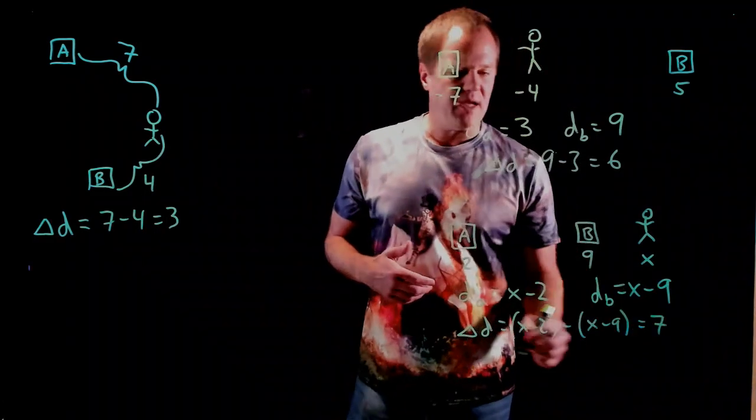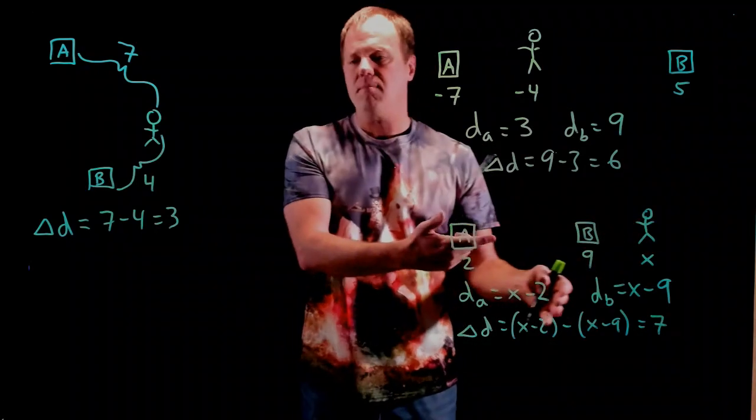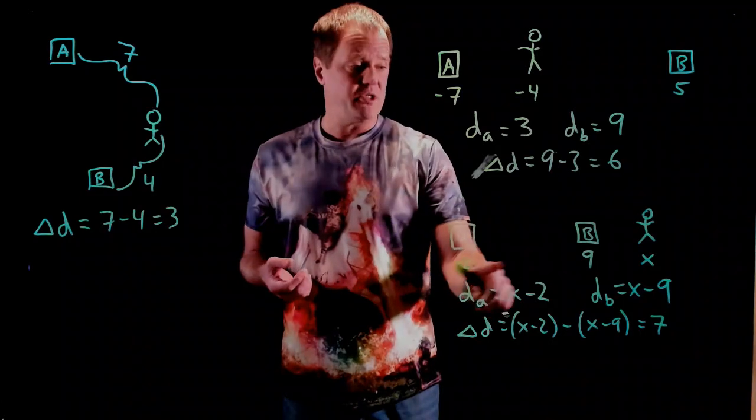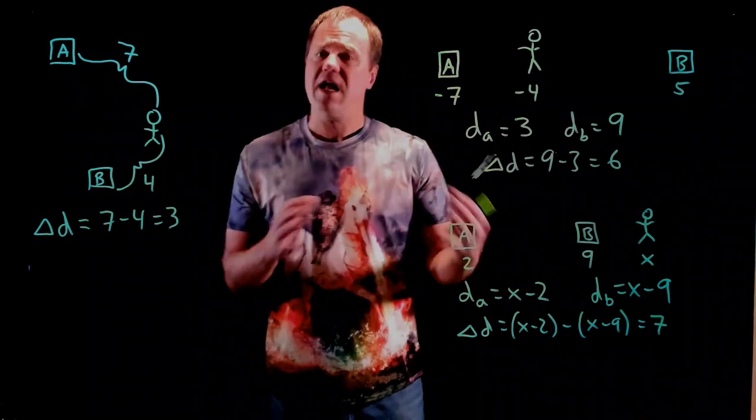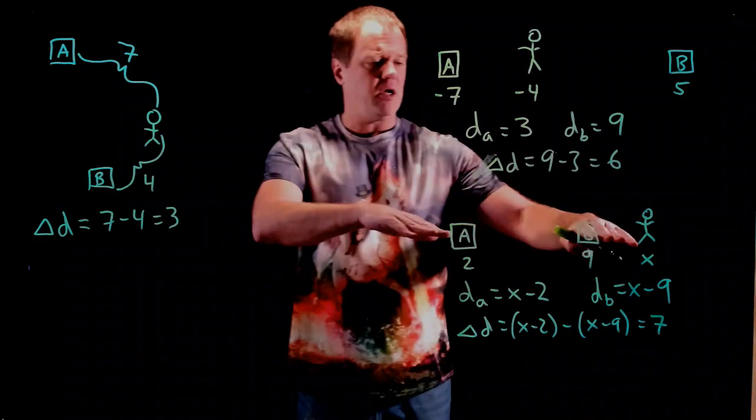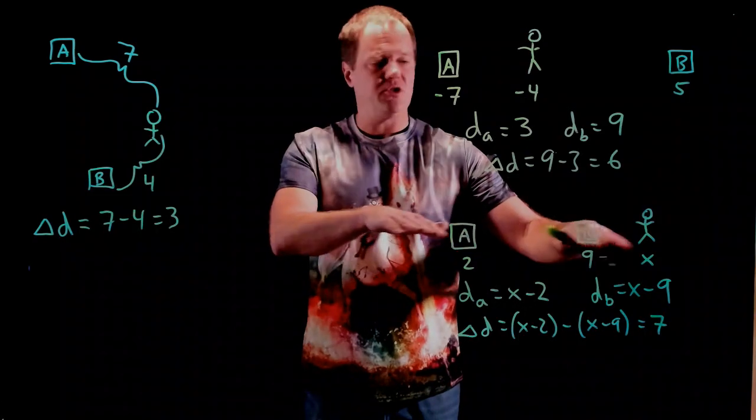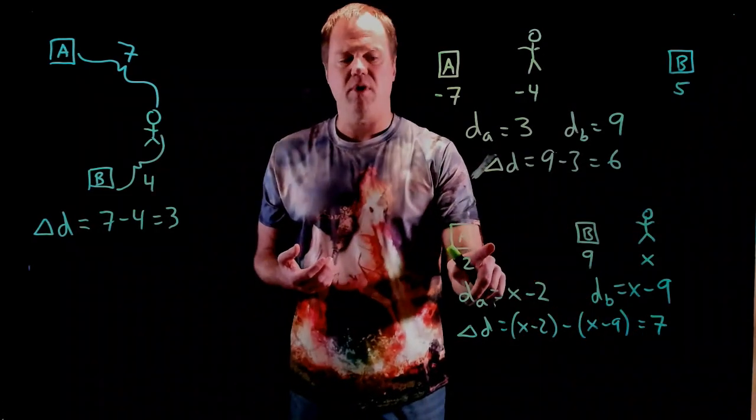So what that means is that the person is 7 meters further from A than they are from B. And that actually turns out to be, you might have noticed, the source separation between A and B. So this is kind of a special case when you're along a line connecting the two sources and you're not between the two sources. Then the path difference will actually equal the source separation.